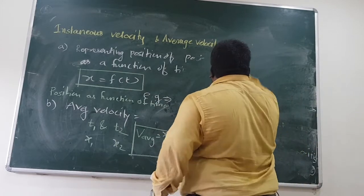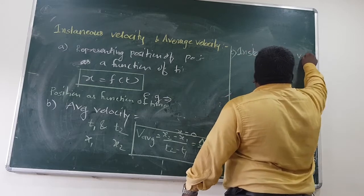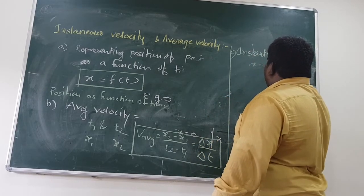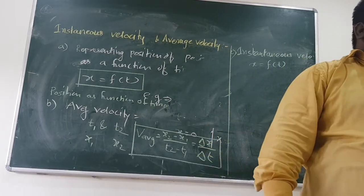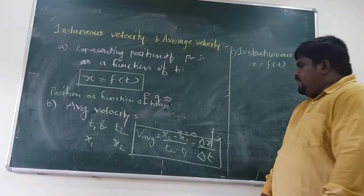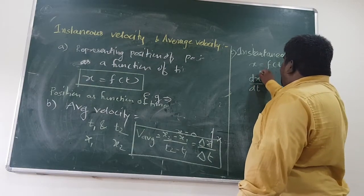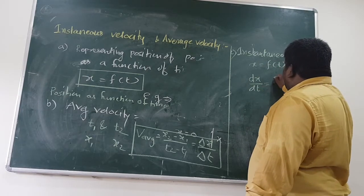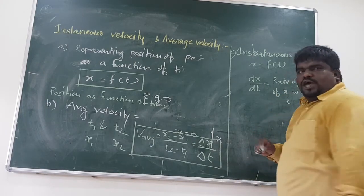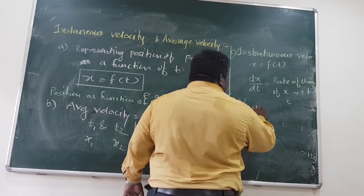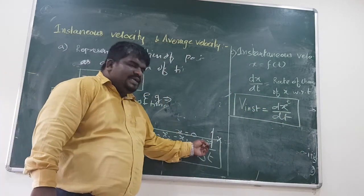Now let us go to the second point of our interest: what is instantaneous velocity? If x is equal to f of t — position is a function of time — generally, rate of change of displacement is velocity. If it is between two points, delta x by delta t; if it is at one point, dx by dt. So if x is a function of time, dx by dt will give you rate of change of x with respect to t — and this is the expression for instantaneous velocity.